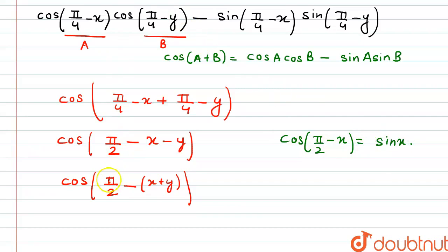So, here, our cos of pi by 2 minus x plus y gives us the value of sin of x plus y. And this is equal to our right-hand side. So, hence, we have proved the solution. This is our final answer. Thank you.